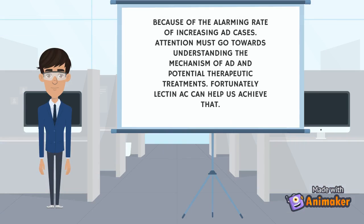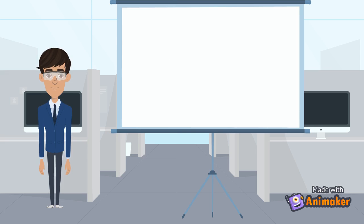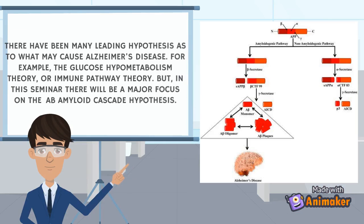Due to the alarming rates of increasing Alzheimer's disease cases, attention must go to understanding this disease and its mechanism and finding a potential therapeutic treatment. Fortunately, lectin affinity chromatography can help us do that. In order to make a treatment for any disease, you must first understand the mechanism and how it works. In this case, there are many hypotheses as to what may cause Alzheimer's disease, but we will focus on the A-beta amyloid cascade hypothesis because it has withstood time and a pharmaceutical company has made an immunotherapy drug from this hypothesis. But we will talk about that later.